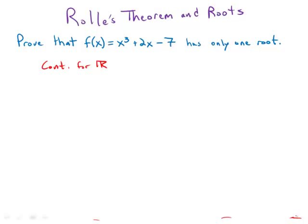And second of all, if we sample some values, we notice that f(1) is negative 4, f(2) is positive 5. And so the fact that it's negative one place and positive another place means it has to cross 0 somewhere in between them because it's continuous. So we know it has one root.